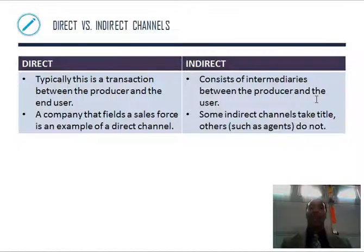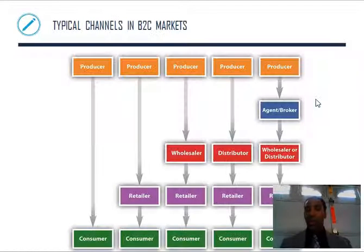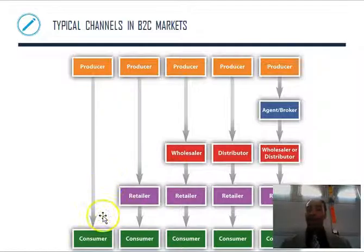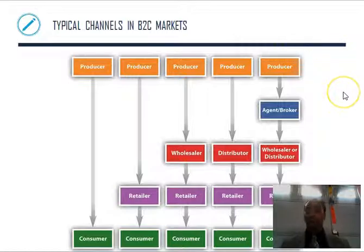Direct versus indirect channels. Direct channels are typically a transaction between the producer and the end user — a company that fields a sales force is an example. I pay a sales force, they sell, and I'm the producer selling to you, the consumer. Indirect channels consist of intermediaries between the producer and the user. Some indirect channels take title — they own the goods at the time — and others, such as agents, do not. There are two typical channels in business-to-consumer markets: at the simplest, producer-to-consumer; then producer-to-retailer-to-consumer; producer-to-wholesaler-to-retailer-to-consumer; producer-to-distributor-to-retailer-to-consumer; and producer-to-agents-to-wholesaler/distributor-to-retailer-to-consumer. These are the different options you may see out there.